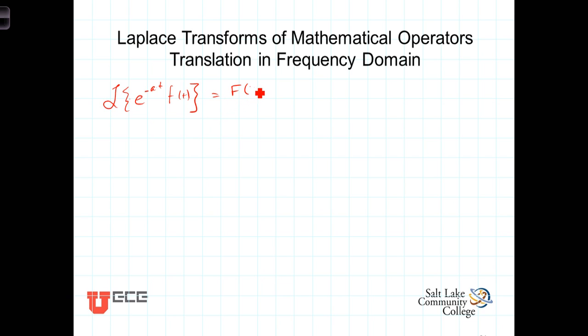It's equal to f of s plus a. So what we're saying here is that we have some f of t, and we have it such that the Laplace transform of f of t is equal to f of s. If we take this f of t and multiply it by an exponentially decaying term, in other words, put an exponential decay onto this function.